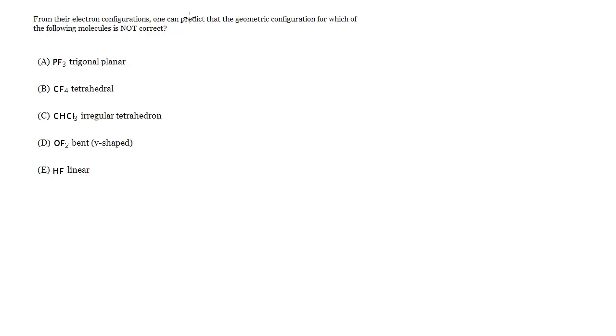From their electron configurations, one can predict that the geometric configuration for which of the following molecules is not correct. So best thing to do for this one, just for sake of illustration, is to draw all of these so you can see a review of how to draw Lewis structures and then how to assign them different shapes. We're going to find that one of these is not going to work.